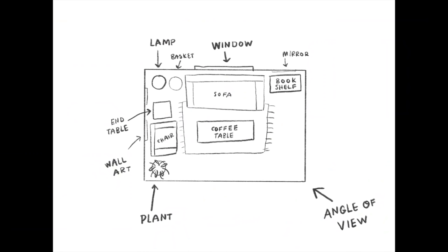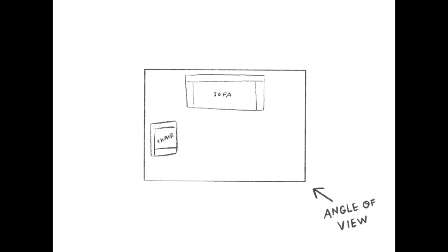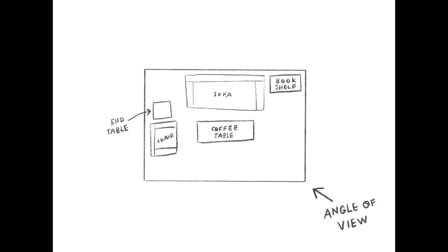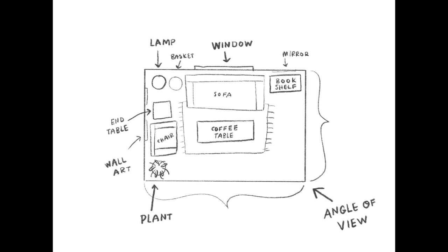It can be difficult to visualize laying out a room in three dimensions, so I recommend putting together a two-dimensional floor plan first. I drew a big rectangle for the room, then determined the angle of view — looking into the corner, so two-point perspective. I added the sofa and chair as the largest furniture pieces, then smaller items like the coffee table, bookshelf, and end table. Then lighting: a lamp and window. Then decor: a plant, wall art, a basket, a mirror. The two walls behind the viewer won't be seen, so I didn't worry about those.